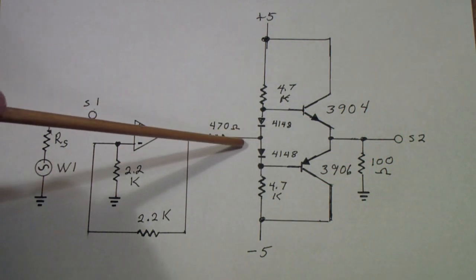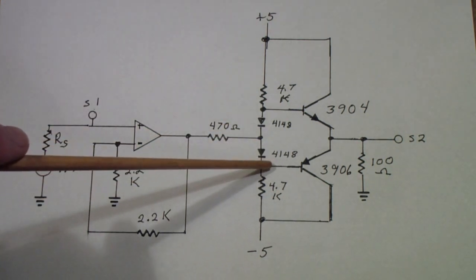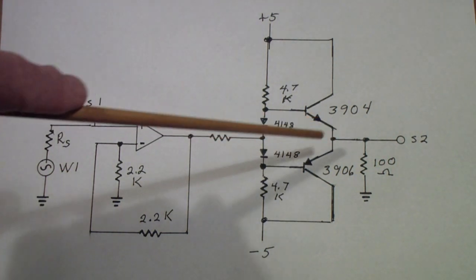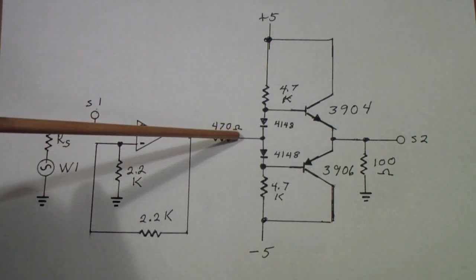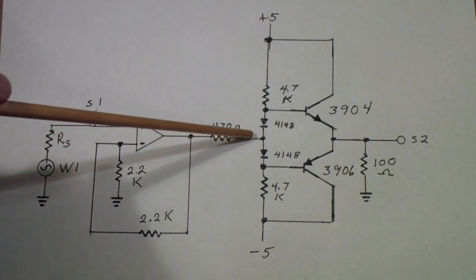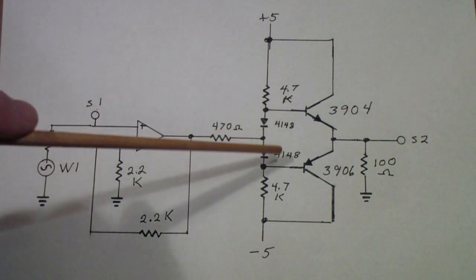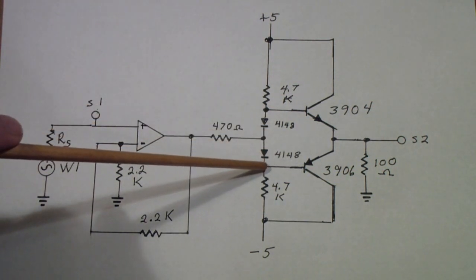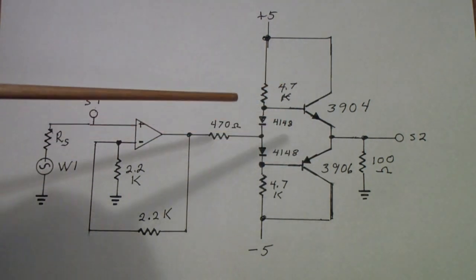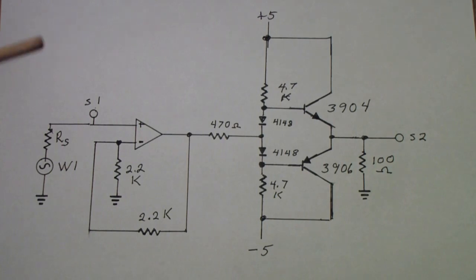If we simply connected this, in other words if the diodes were shorted, this would be a class B amplifier. Class B in that for no input signal neither transistor would conduct at all. When the signal went positive this transistor would conduct, when the signal goes negative this transistor would conduct through the base to the emitter and through the load resistor.